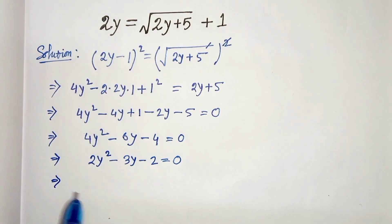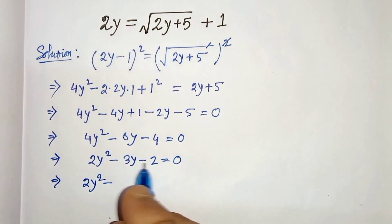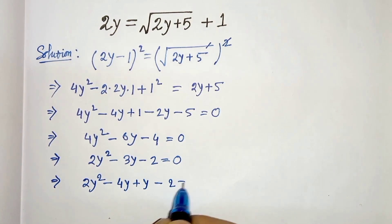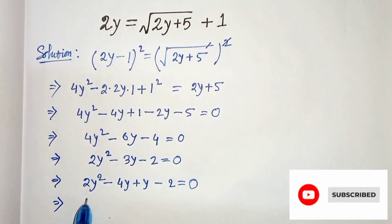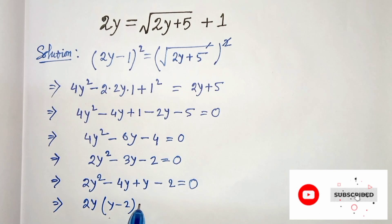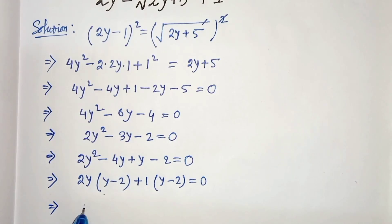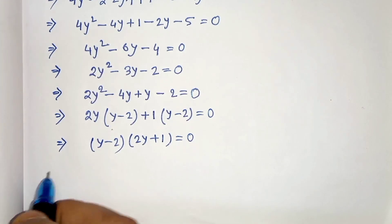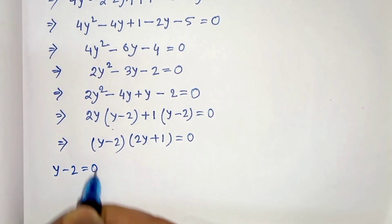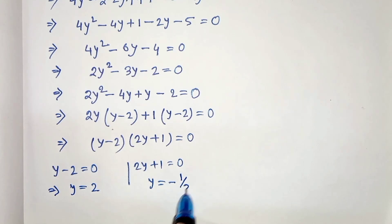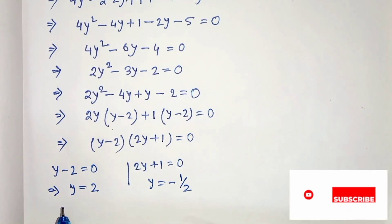To factorize 2y² minus 3y minus 2, we split the middle term: 2y² minus 4y plus y minus 2 equals 0. Taking 2y common from the first pair gives 2y(y minus 2), and taking 1 common from the second pair gives 1(y minus 2). So (y minus 2)(2y plus 1) equals 0, giving y equals 2 or y equals minus one half.